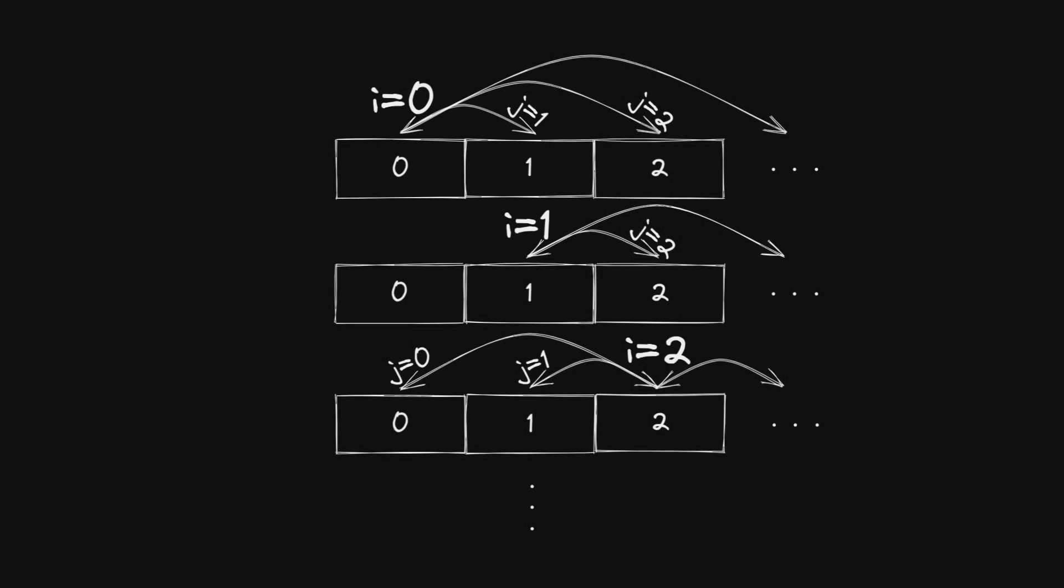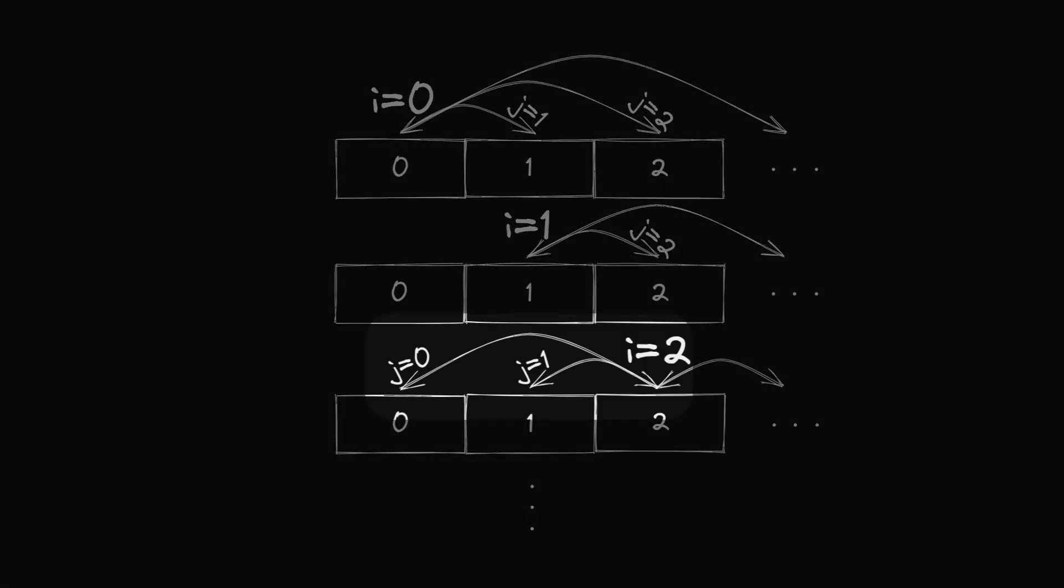In the next iteration of i, we see the same thing, but with both 0 and 1 towards 2.